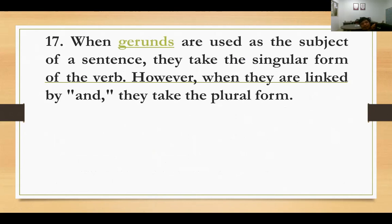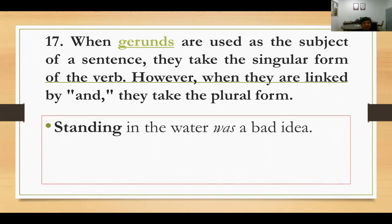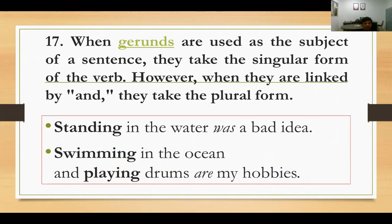Number sixteen: when gerunds are used as the subject of a sentence, they take the singular form of the verb. However, when linked by and, they take the plural form. Contoh: 'Swimming in the water was a bad idea' — singular. Tapi 'Swimming and playing are my hobbies' — dua gerund digabung dengan and, dianggap plural, verbnya are.